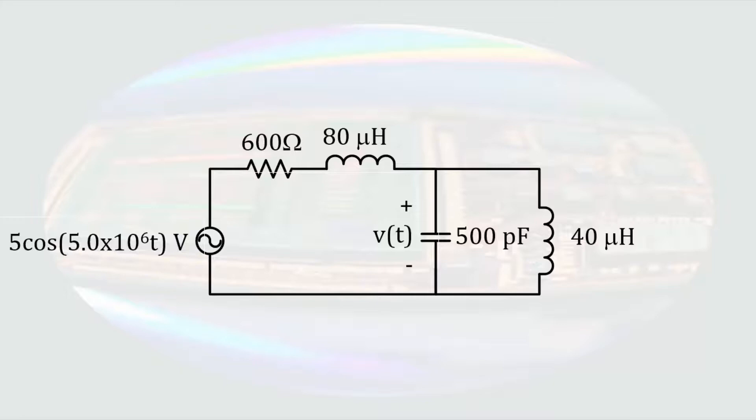We have one sinusoidal source in the circuit, so phasor analysis can be used to solve the circuit. The first step will be to take the circuit over to the phasor domain. The simplest quantity to convert is our variable, the time-dependent voltage V. This becomes the phasor voltage V. The voltage source has a magnitude of 5 with an angular frequency of 5 million radians per second and no phase angle. Setting the angular frequency off to the side for use in future equations, we have the phasor voltage of 5e to the J0 degrees volts.